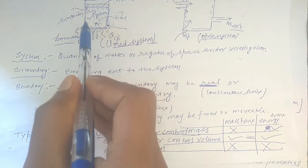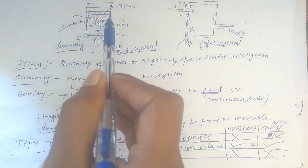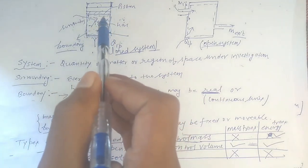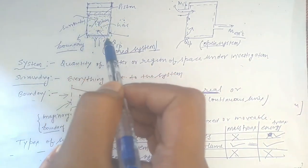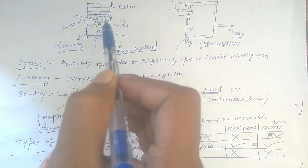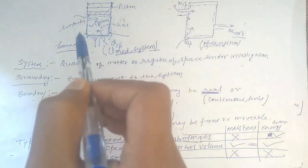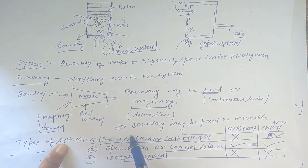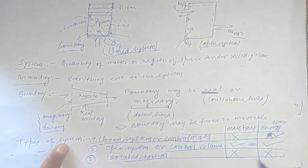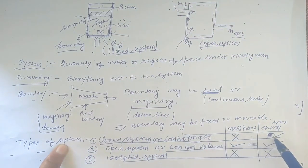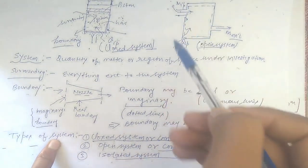In a closed system, basically there is no mass transfer. For example, this piston-cylinder arrangement — I am supplying heat here, but the gas mass that is filled inside the system is not moving out of the system. Even after expansion, the mass of gas inside remains the same. So mass is fixed in case of a closed system, but energy exchange (heat transfer) is happening. So in a closed system, there is no mass transfer but energy transfer does occur.